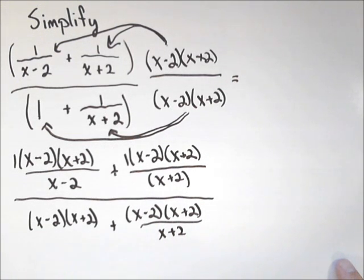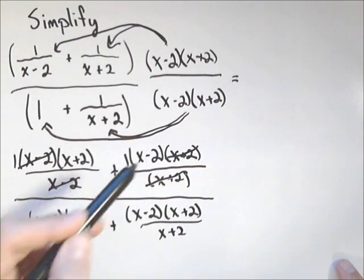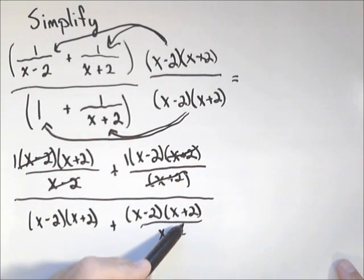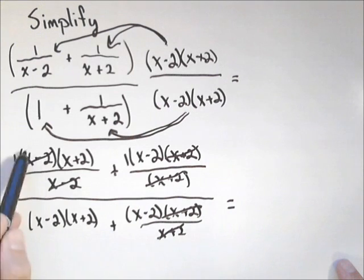But, we're actually gonna help ourselves out quite a bit because now there's some canceling we can do. This x minus two will cancel with this x minus two. This x plus two will cancel with this x plus two. This x plus two will cancel with this x plus two. So, let's see what is all we have left. All that canceled.